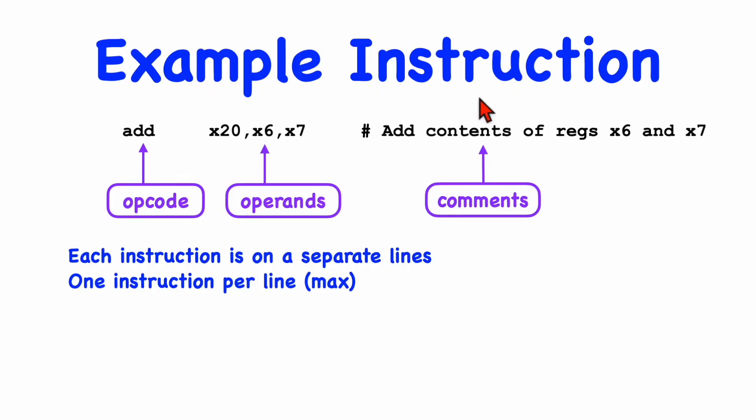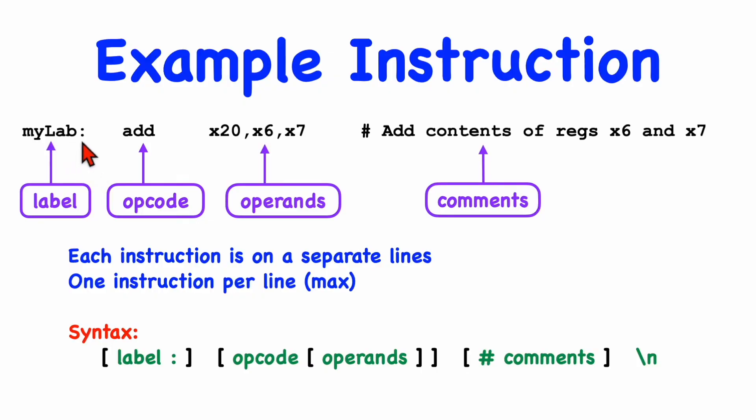Okay, here is our first example RISC-V instruction. It's an add instruction. And in this example, it's adding the contents of registers X6 and X7 and placing the result in register X20. Like every instruction, it begins with an opcode. In this case, it's add. And then we have some operands to that instruction. And we have an optional comment. With assembly language programming, every instruction is on a separate line. And there's at most one instruction per line. We can also have an optional label in front of the instruction, which gives a symbolic name to the address into which the add instruction will be placed. Labels are identified by a colon, which is not actually part of the label.